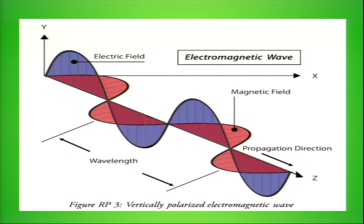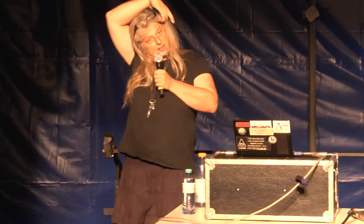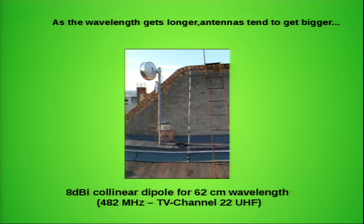Electromagnetic waves have an electric and a magnetic field, and as they travel through space at the speed of light, all three properties are related. The consequence is that our Berlin experiment uses 62 centimeter long waves, which means our antennas also tend to be quite large.